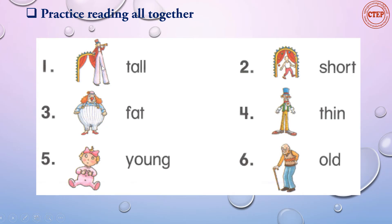Let's say them again together. Number one: tall. Number two: short. Number three: fat. Number four: thin. Number five: young. Number six: old.